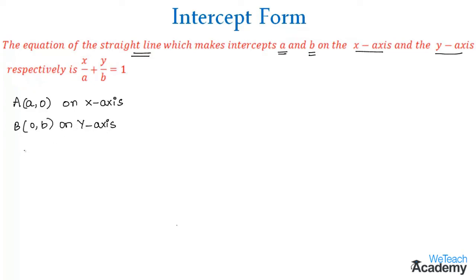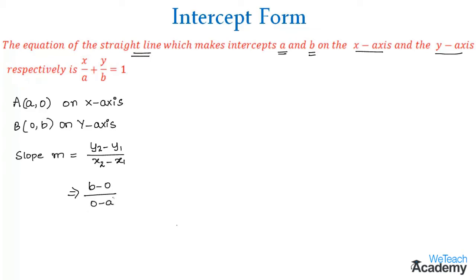Now let us consider the slope of this line, which will be m = (y2 - y1) / (x2 - x1). By substituting the values we get (b - 0) / (0 - a), so we get m = -b/a.